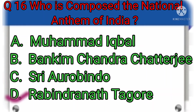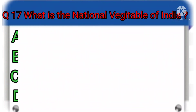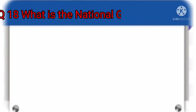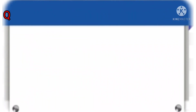The answer is Rabindranath Tagore. Question number 17: What is the national vegetable of India? The answer is Pumpkin. Question number 18: What is the national game of India? The answer is Hockey.